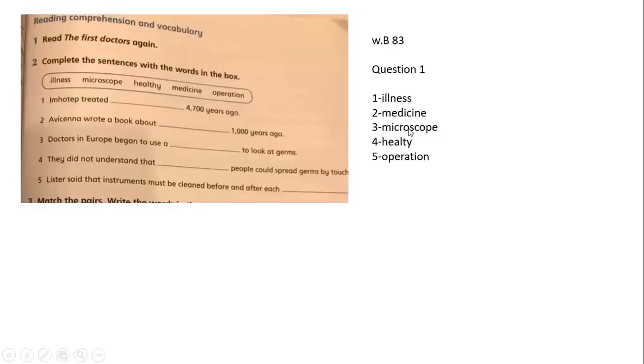It is very important. Now let's move to the second page. Here is very important. Complete the sentence with the word in the box. We have illness, microscope, healthy, medicine, and operation. Imhotep treated illness 4,700 years ago. Avicenna wrote a book about medicine 1,000 years ago. Doctors in Europe began to use microscopes to look at germs. They did not understand that healthy people could spread germs by touch.